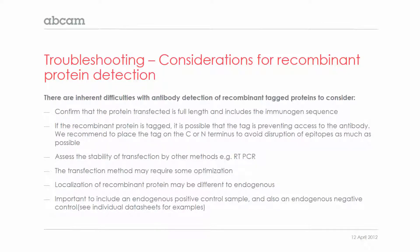The last troubleshooting consideration is recombinant protein detection. Many customers are detecting recombinant proteins, and there are inherent difficulties worth considering before you start. Confirm that the protein you've transfected is full length and includes the immunogen sequence — if you're unsure, contact our scientific support team at technical@abcam.com. Many recombinant proteins are tagged, and sometimes a tag can prevent antibody access to the epitope, so we recommend placing a tag on the C- or N-terminus to avoid disruption of epitopes as much as possible.